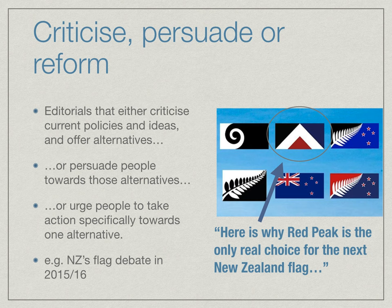Most editorials tend to criticize, persuade, or reform — criticizing current policies and ideas and offering alternatives, persuading people towards those alternatives, or urging people to take action. For example, in 2015 and 2016, New Zealand was debating about getting a new flag, and there were six different options presented to people in the first referendum. If I favored the red peak flag, I would have written an editorial saying, 'Here's why red peak is the only real choice for the next New Zealand flag,' outlining the arguments for that and shooting down all the other flags. This is a very common type of editorial designed to get people thinking critically about an issue.